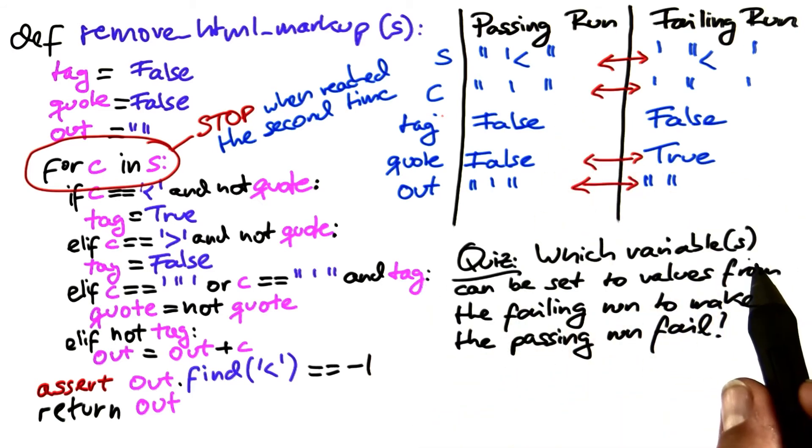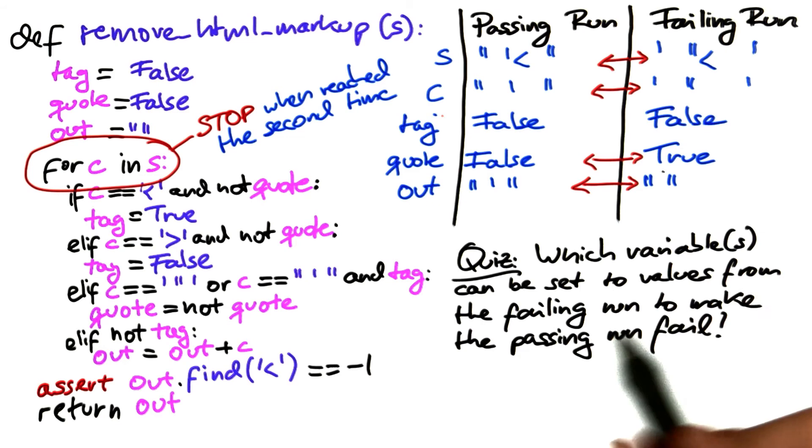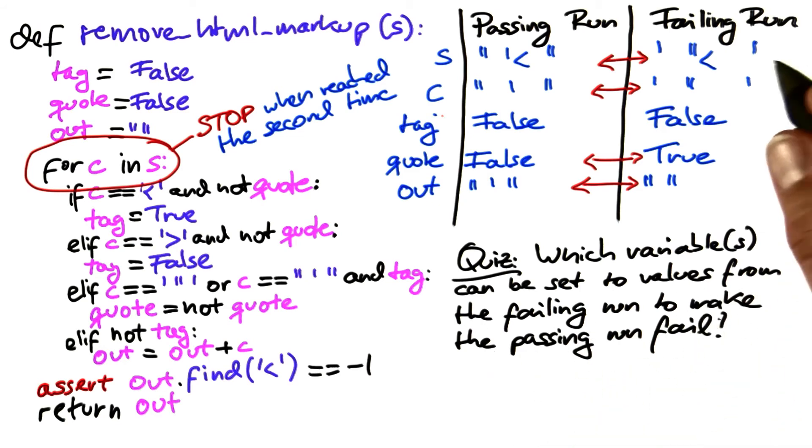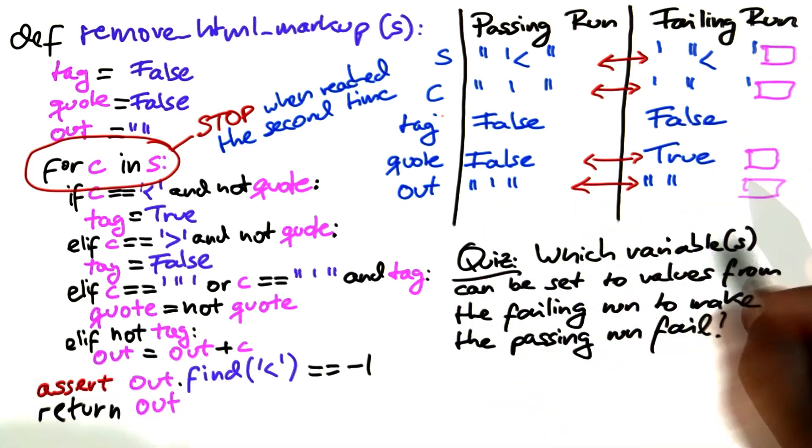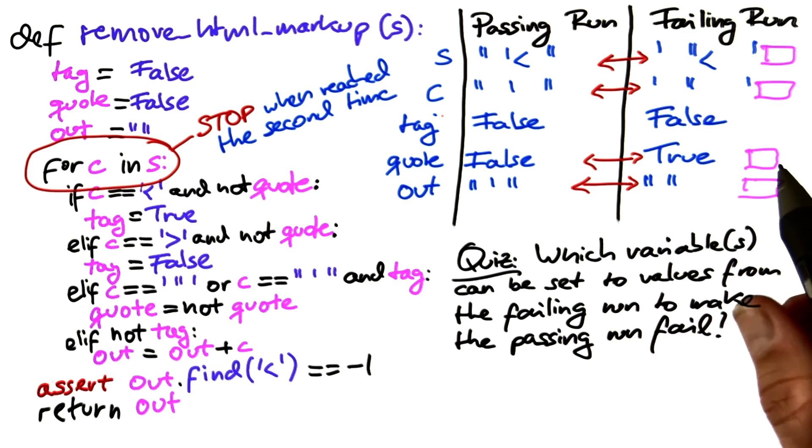So, here's our quiz. Which of these four variables can be set to values from the failing run to make the passing run fail? Is it s? Is it c? Is it quote? Is it out? Or is it a combination of multiple variables?